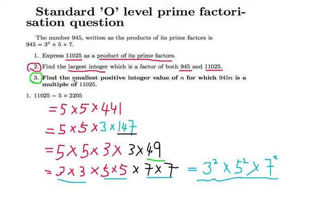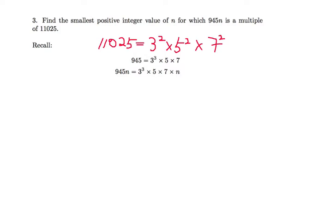Find the smallest positive integer n such that 945n is a multiple of 11,025. Previously, we have already done the prime factorization for this and we are given this as well.